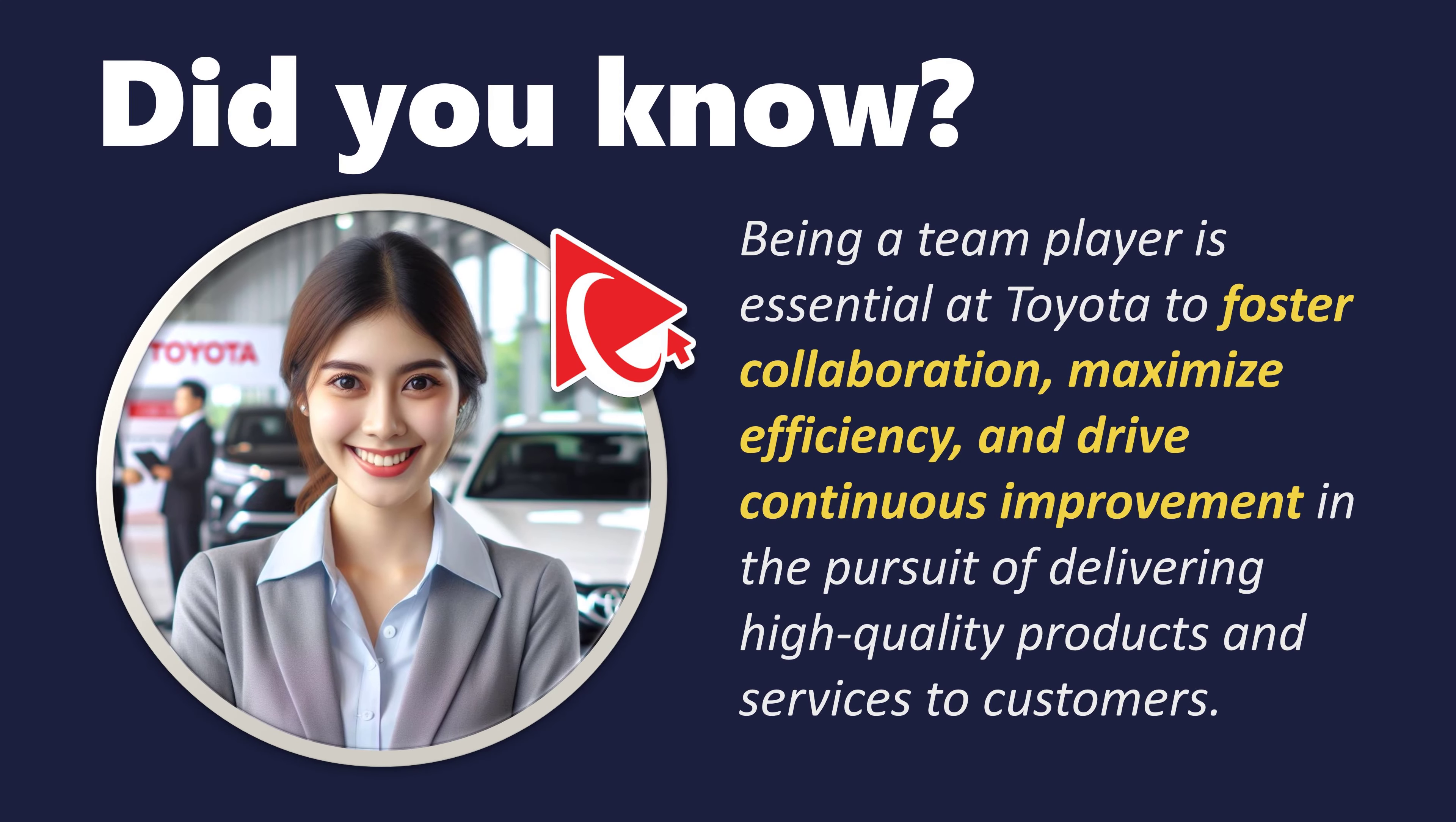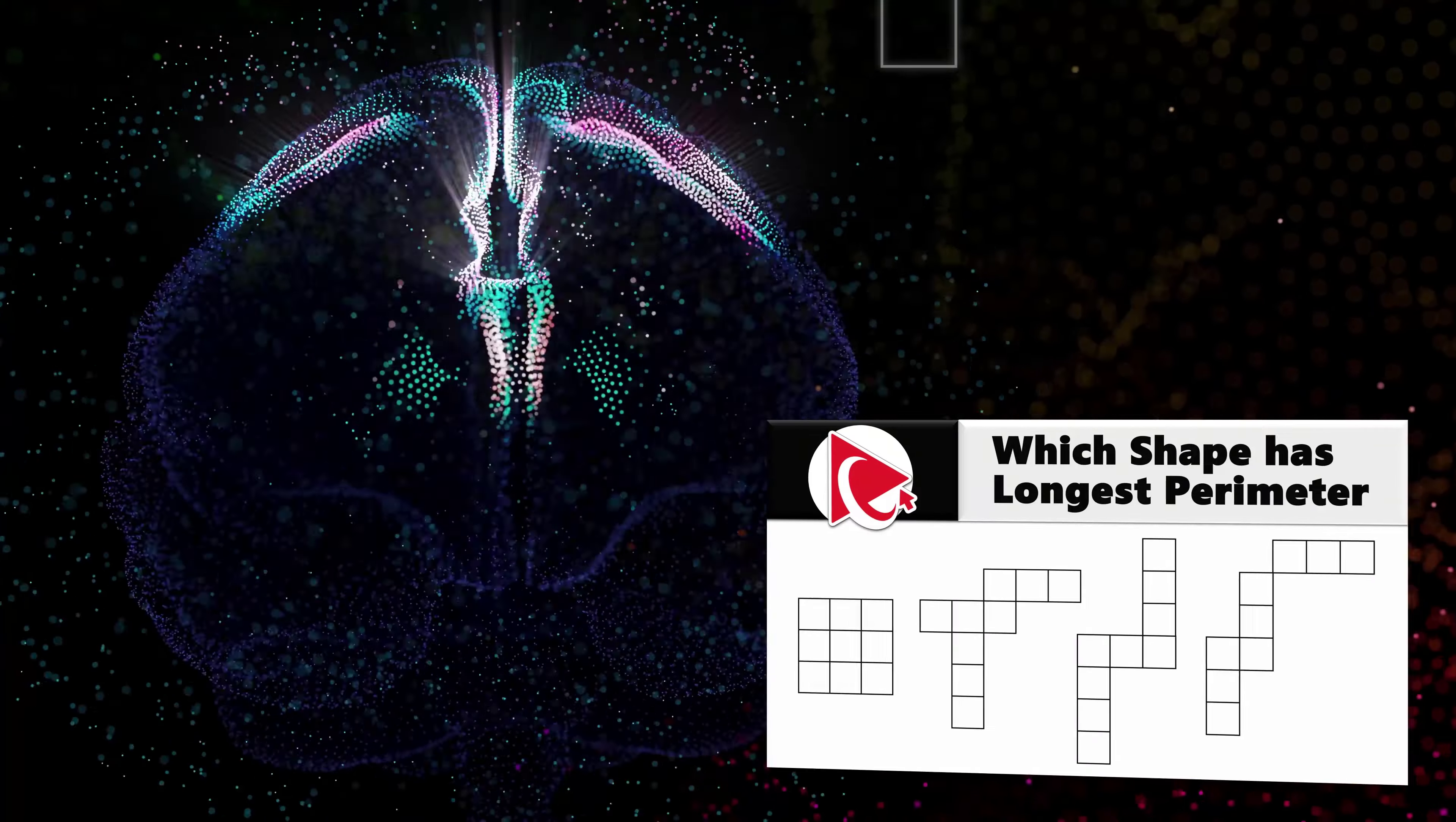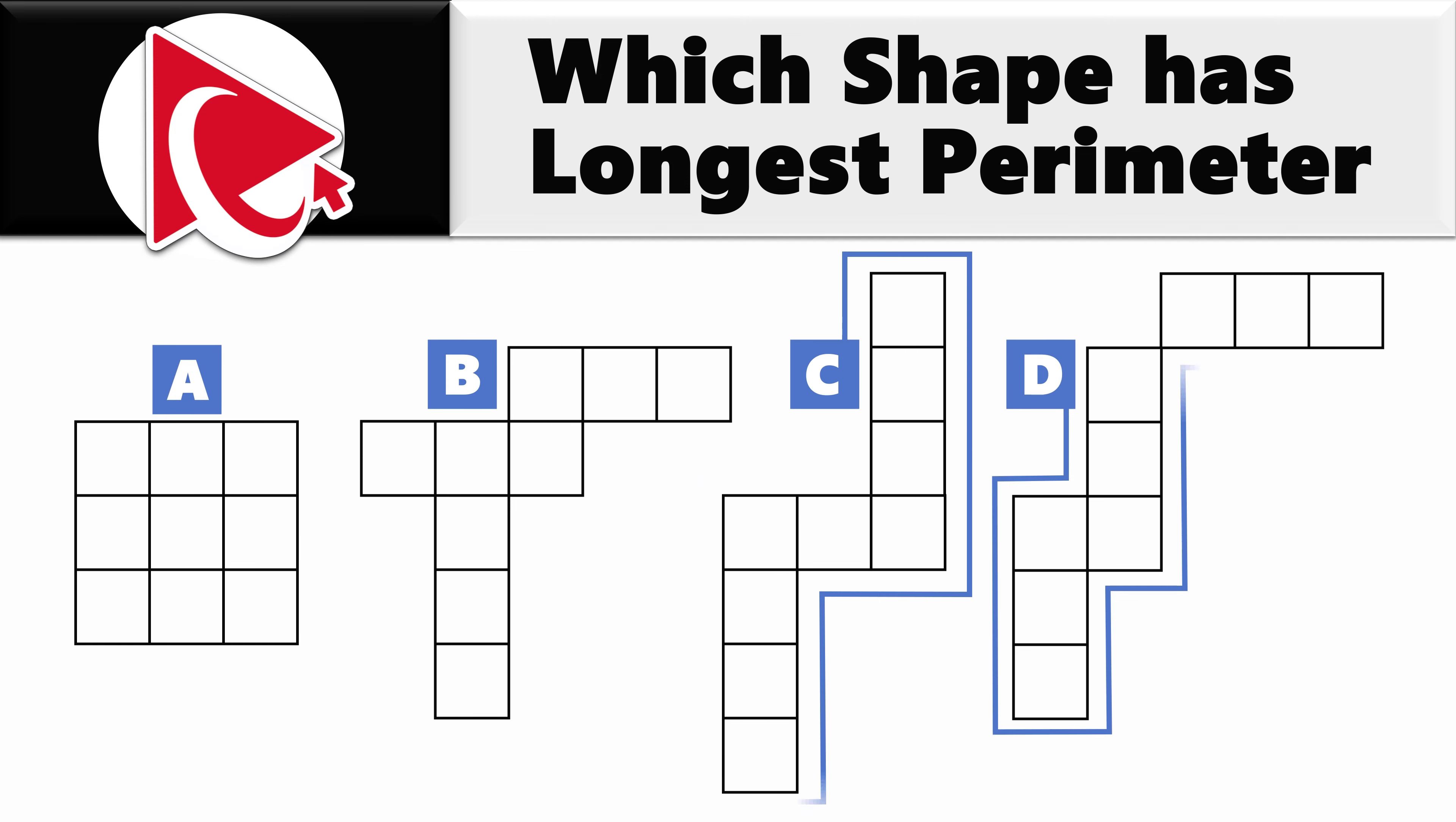Let's face it, cracking this particular question is like teaching a giraffe to limbo, a tall order, but once you bend your mind around it, the success is a real stretch. You're presented with 4 shapes and you need to determine which shape has the longest perimeter. Your goal is to select the answer out of 4 possible choices: A, B, C, and D.